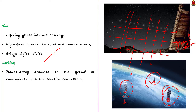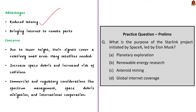How does Starlink work? Starlink utilizes advanced technologies including phased array antennas on the ground to communicate with the satellite constellation, aiming to provide users with a more reliable and high-performance internet connection. Advantages include: first, reduced latency between sender and receiver as the satellites are placed in low Earth orbit — latency being the time it takes for a data packet to go from one place to another; and second, it can deliver internet to remote parts of the world where traditional methods using fiber optic cables have failed.